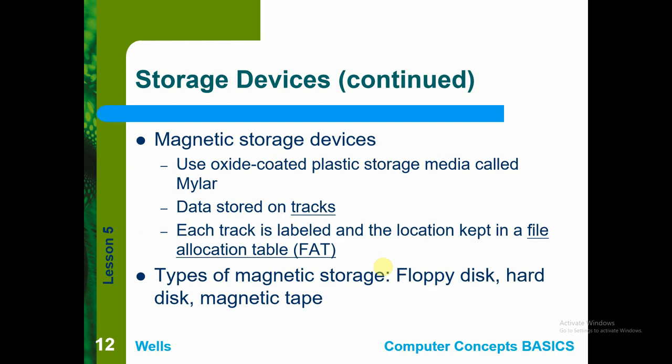Magnetic storage devices have a coating on plastic called Mylar. Data is stored via tracks within the disk — the disk has a magnetic material inside that carries the data. Each track is labeled and its location is kept in a File Allocation Table, or FAT, which serves as the directory for the stored tracks. Examples of magnetic storage include the floppy disk, hard disk, and magnetic tape.